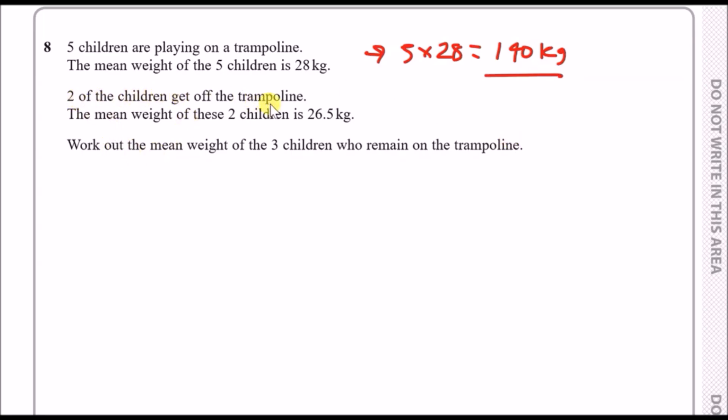For the second part it says two of the children get off the trampoline. The mean weight of these two children is 26.5. So again because there's two of them and they average 26.5, if you double that you're going to get a total weight of 53 kg for both children. Work out the mean weight of the three children who remain on trampoline.